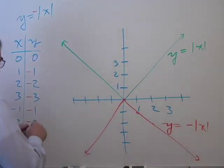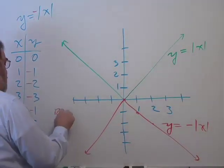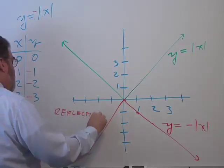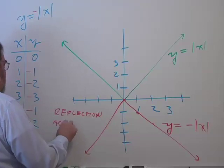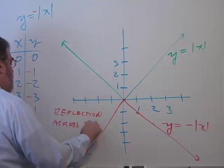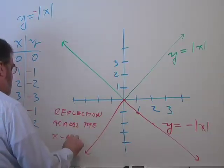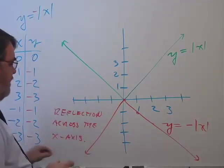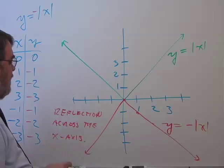So that's a, and I call that a reflection across the x-axis. All right. So that's how you do a reflection around the x-axis.